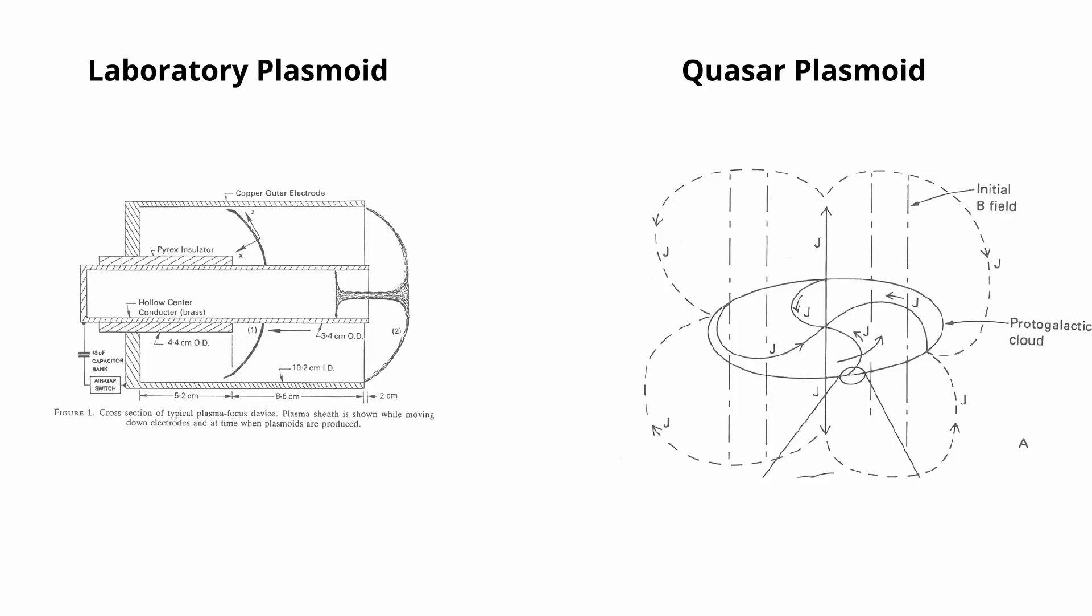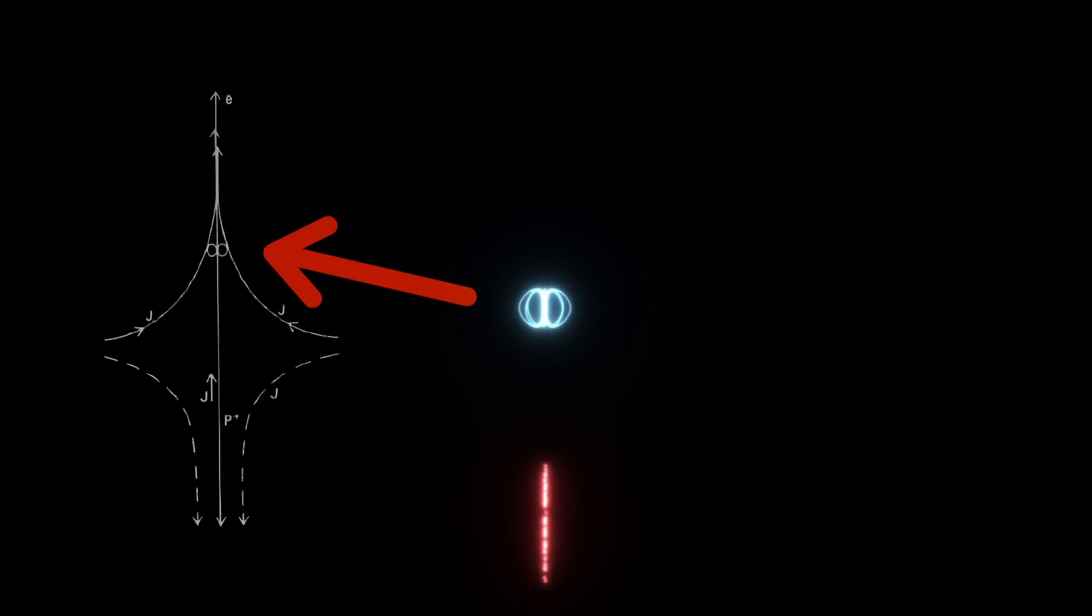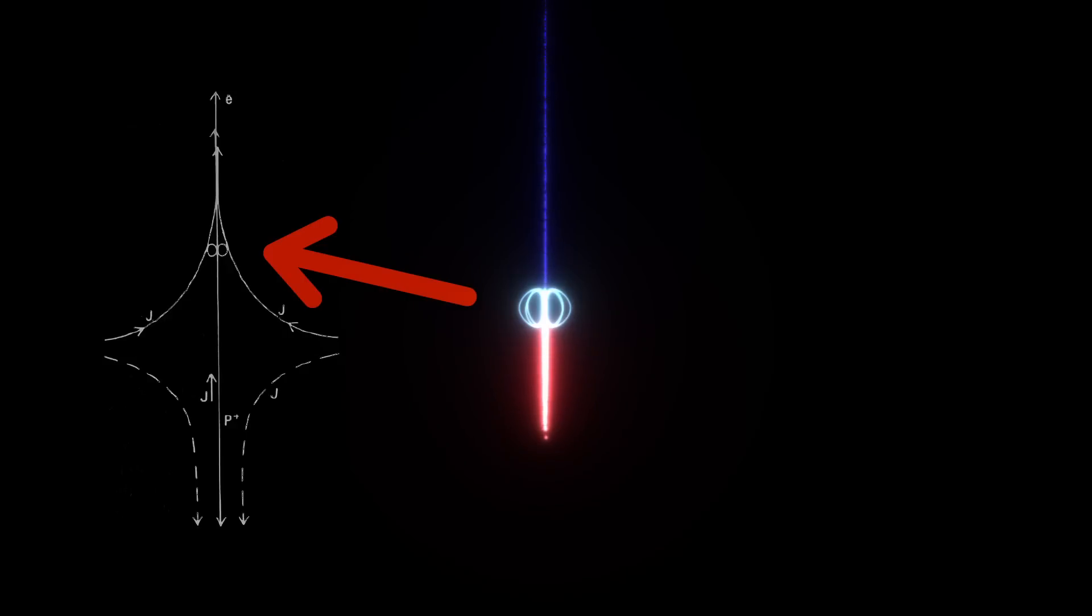The energy source for the laboratory version and the quasar model differ significantly. In the lab, the energy comes from an external energy storage device, whereas in the case of the quasar, the energy is derived from the rotation of the plasma disk which generates the current. In Lerner's model, the same sequence of events observed in the lab occur in the quasar. As the incoming filaments compress the magnetic field, the magnetic field continues to grow until it reaches a critical level. Beyond this point, synchrotron radiation and axial electromotive force are generated, creating two axial beams, electrons in one direction and protons in the other.